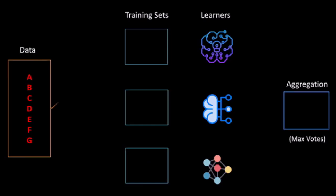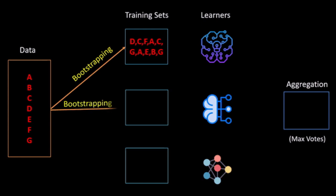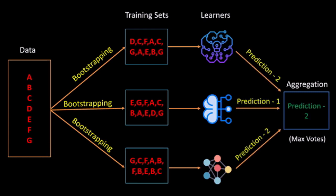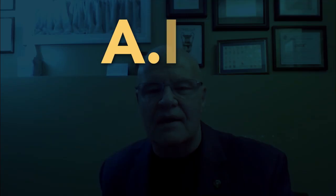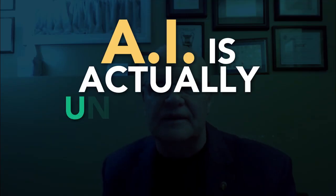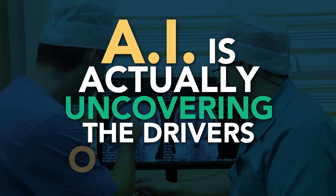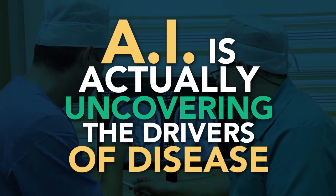We have built ensemble AI machine learning strategies that integrate causal inference within the model to be able to capture that variation and to minimize spurious correlations within the data. Our AI and causal inference, integrating them together, we are actually uncovering the drivers of disease.